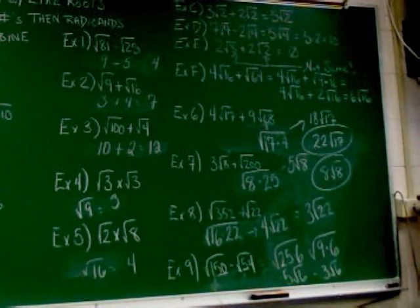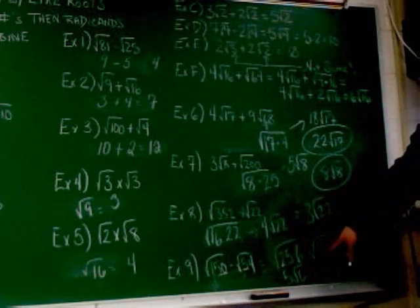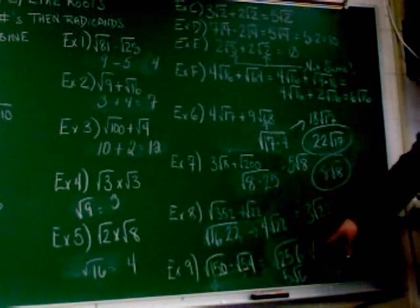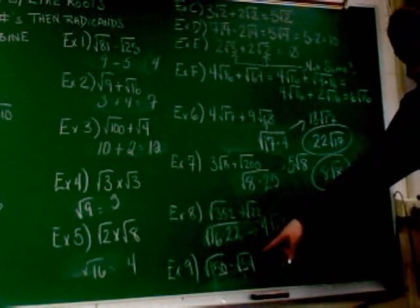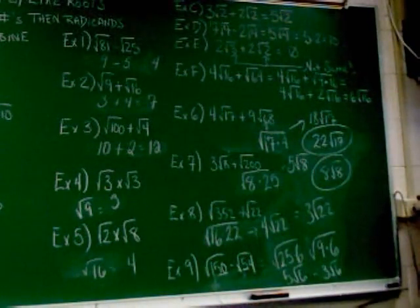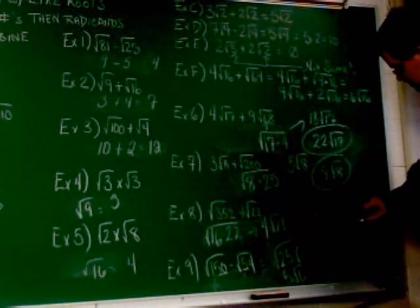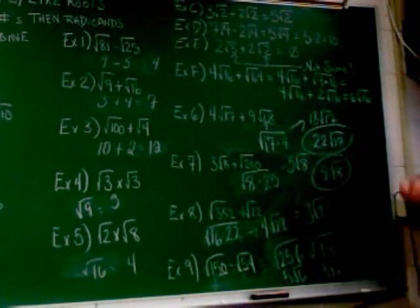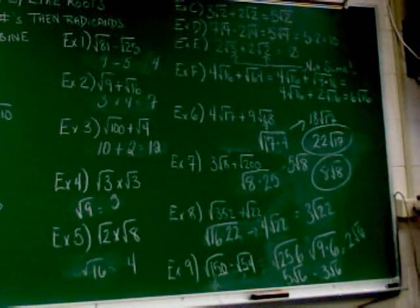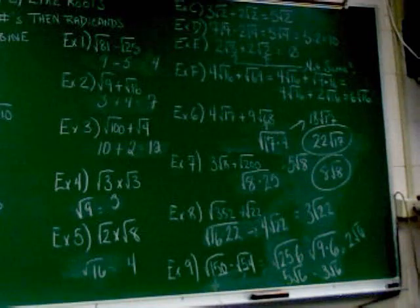5 root 6 minus 3 root 6 is 12. That's 12.